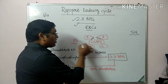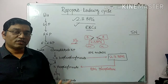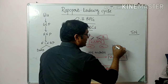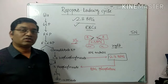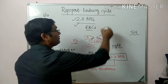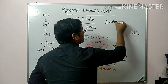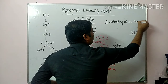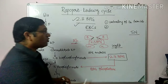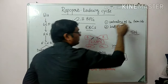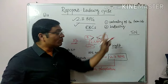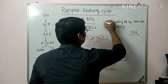As 2,3-bisphosphoglycerate occupies the central pocket of the hemoglobin molecule, it unloads oxygen to the tissue. This is an important function of 2,3-BPG — it shifts the oxygen dissociation curve to the right and is responsible for unloading of oxygen from hemoglobin to the tissue. A second important function of 2,3-BPG is its role in the buffering action of RBCs, because of its phosphate groups.